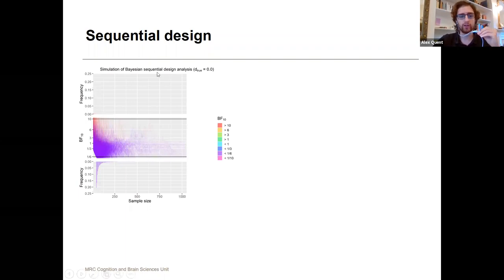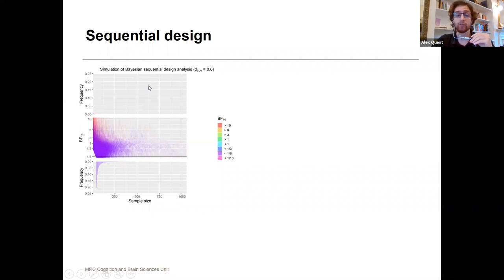Here's a similar plot, but here we have in addition histograms with the same y-axis at the top and bottom which shows you how often simulations end at a particular sample size that is seen on the x-axis here. You can see that, just as a brief glance, this is a true effect size of zero.